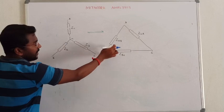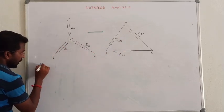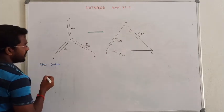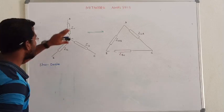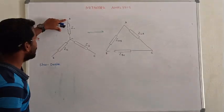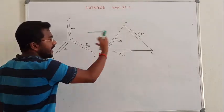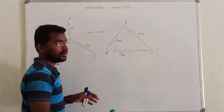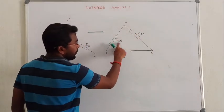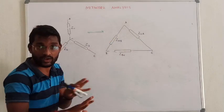Let us see how to get the equivalent impedance from star to delta. First, we are going from star to delta. If you do a conversion of a star network, you will first name A, B, C. That is equal to a delta network where you will find A-B, B-C, C-A.